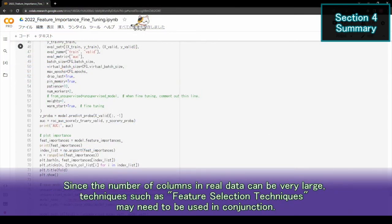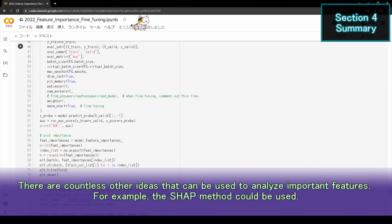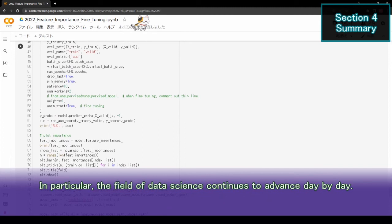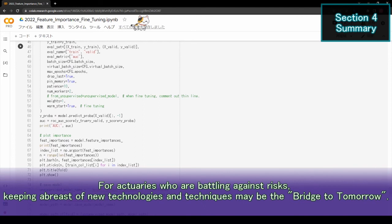Since the number of columns in real data can be very large, techniques such as feature selection may need to be used in conjunction. There are countless other ideas that can be used to analyze important features, for example the SHAP method could be used. I believe that there is no silver bullet in analysis, therefore it may be a good idea to learn a variety of methods. In particular, the field of data science continues to advance day by day. For actuaries who are battling against risks, keeping abreast of new technologies and techniques may be the key to tomorrow. Thank you for watching.